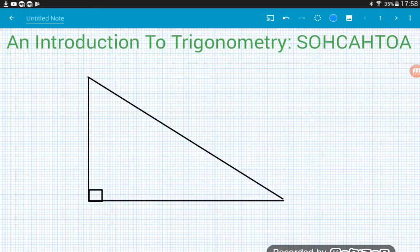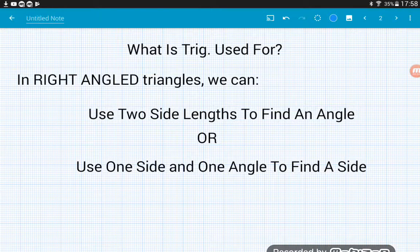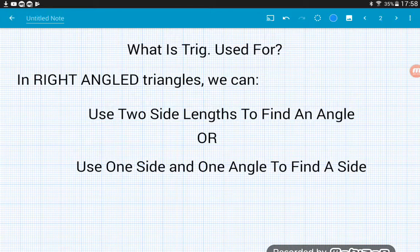So this sort of trigonometry is used inside of right angled triangles, strictly right angled. Now we can either use two side lengths to find one of the two acute angles, we know they're always going to be acute because we're inside of right angled triangle, or we can use one side length and one of the acute angles to find another side length.